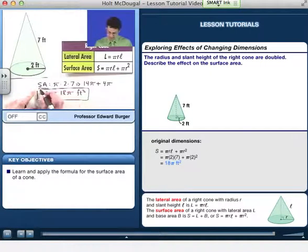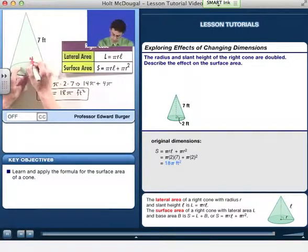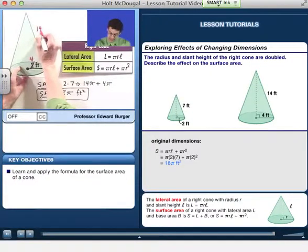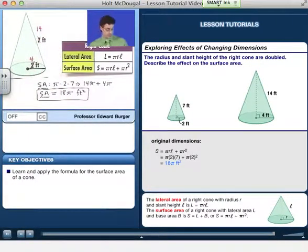Now I want to compare that to what we're going to get when we double these lengths. Let's change 2 to 4, let's change 7 to 14, and compute the surface area now and see how that affects this answer.